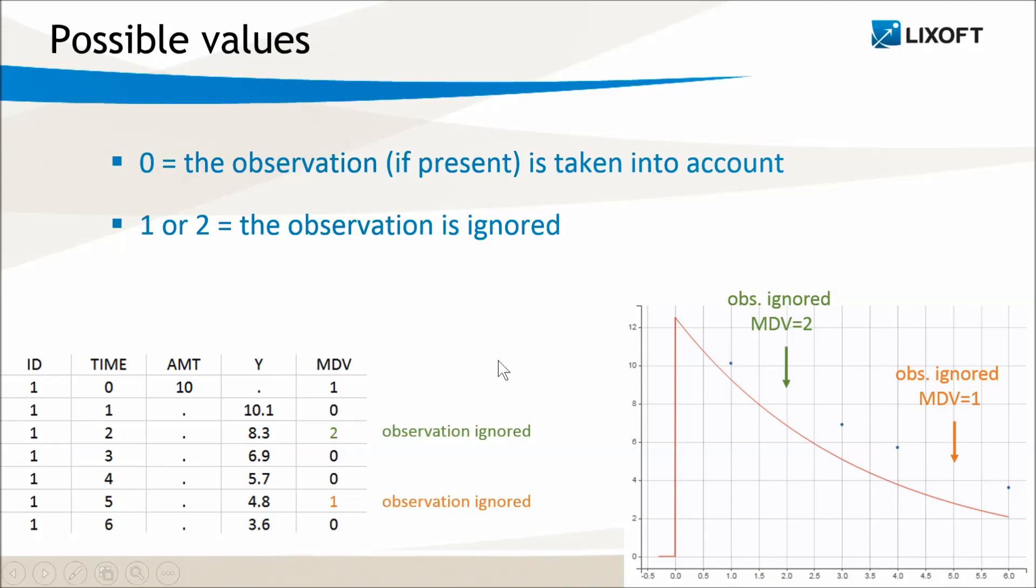In this example, we see that lines with MDV equals one or two do not appear as observations in the initial estimates plot.